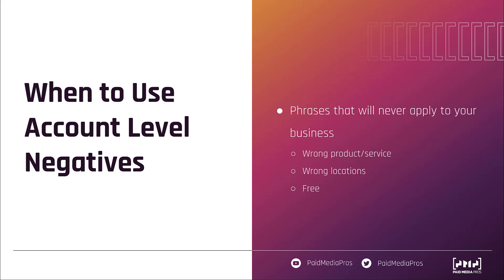Another instance for using account level negatives is a wrong location. Google's location settings do take into account your physical location as well as intent. In some accounts we run, lots of terms come through with specific location intent attached. If you only support businesses in one specific state, you can easily add all of the other states as negative keywords at the account level. I also always add the term free — because you never want people searching for free samples — but only if you never give out free samples or do anything for free.